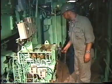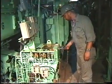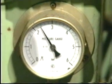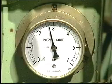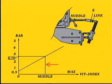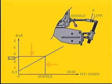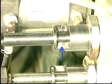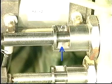Turn the regulating hand wheel until the pressure on the pressure gauge reads 2.75 bar. The VIT rack must be adjusted so that the middle index of the VIT rack can be read when a control air pressure of 2.75 bar is applied. If the actual VIT index does not correspond to the middle index, adjust the link until it does.